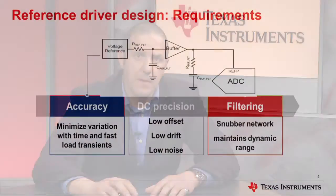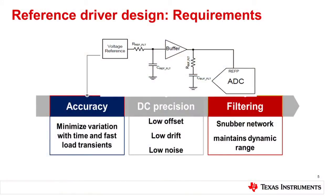For the reference driver design, here are some of the requirements. First, there's accuracy — to minimize variation with time and fast load transients. There's DC precision, which encompasses low offset, low drift, and low noise. And then filtering — no surprise there. We're going to choose a snubber network to maintain the dynamic range, since we're operating at low voltages, namely five volts.